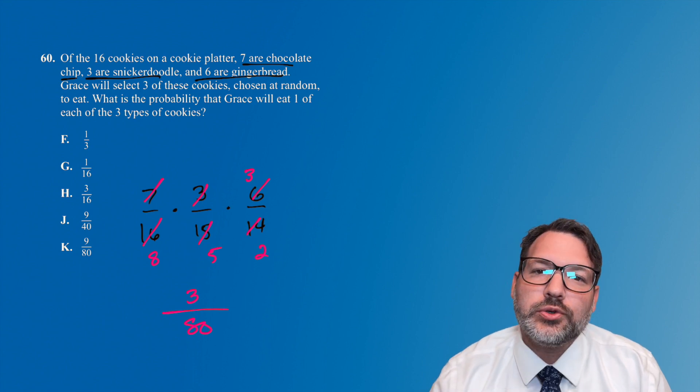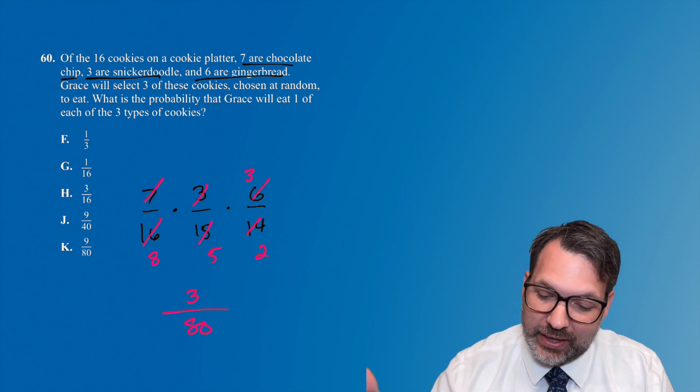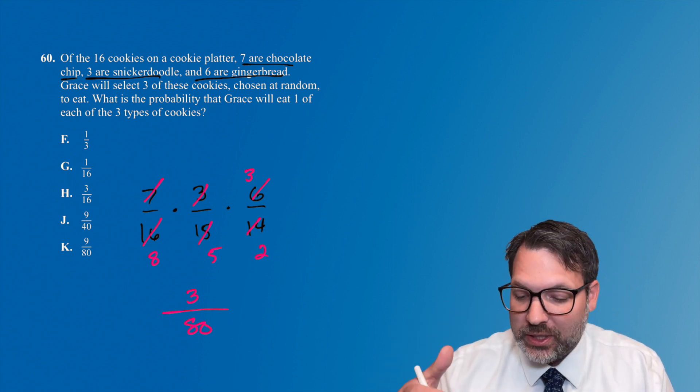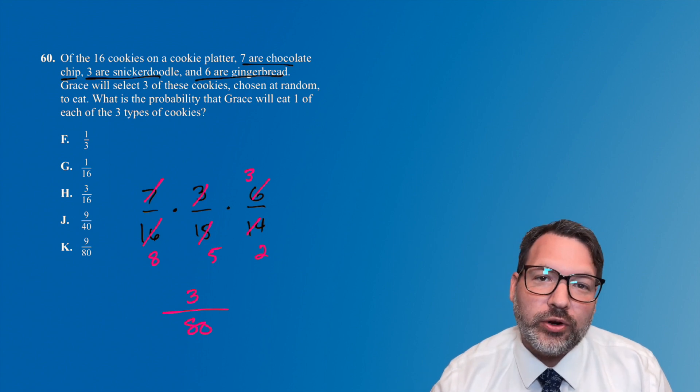The reason it's not an answer choice is that although it is true that we have a 3/80 chance of selecting a random chocolate chip cookie, then a random snickerdoodle, then a random gingerbread cookie, that's just one particular arrangement.